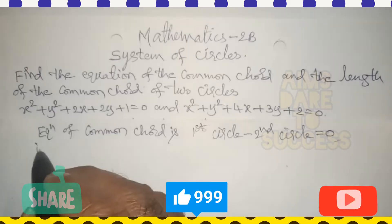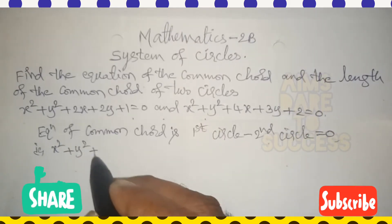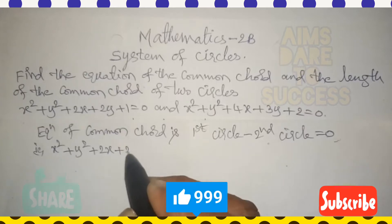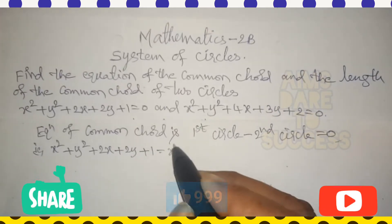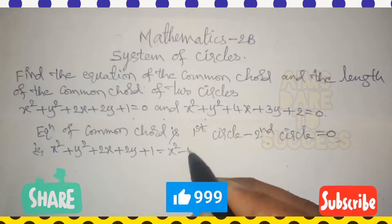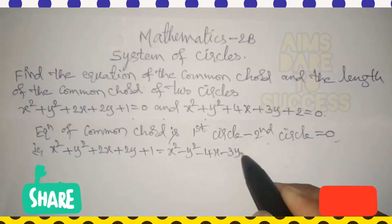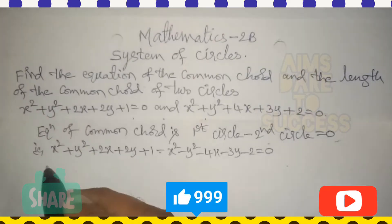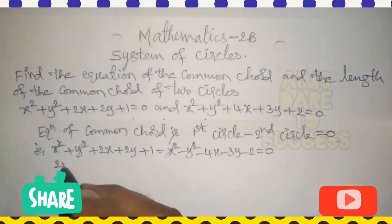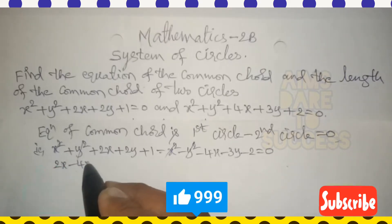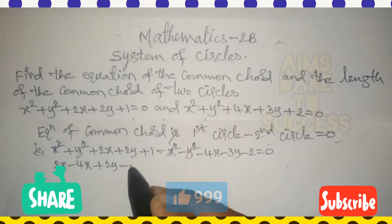First of all, we can find the equation of the common chord. Equation of common chord means first circle minus second circle equals 0. First circle is x² + y² + 2x + 2y + 1 = 0. Minus second circle: −x² − y² − 4x − 3y − 2 = 0.